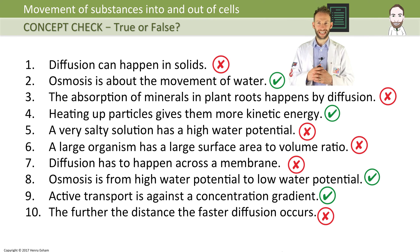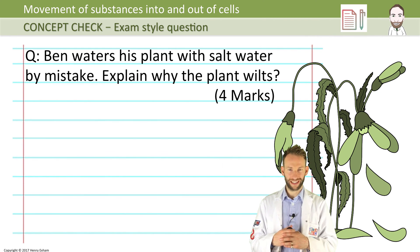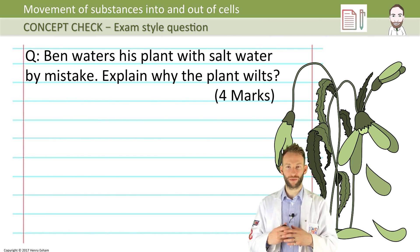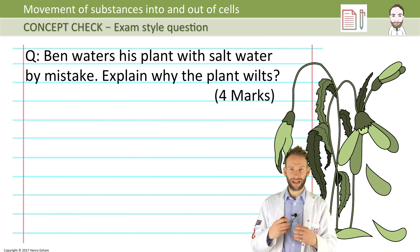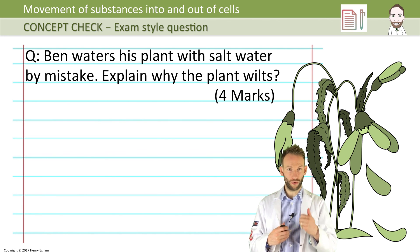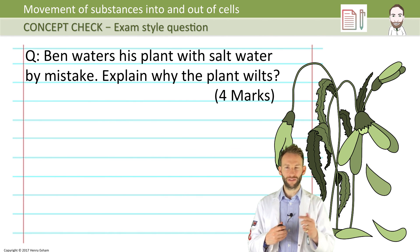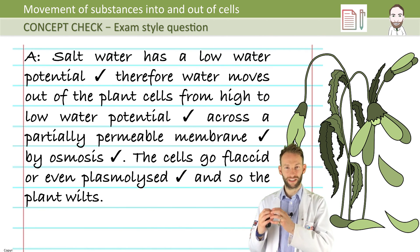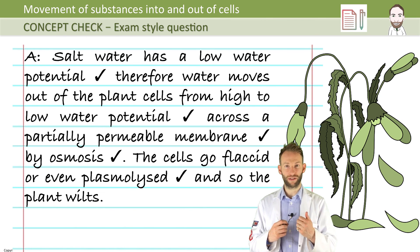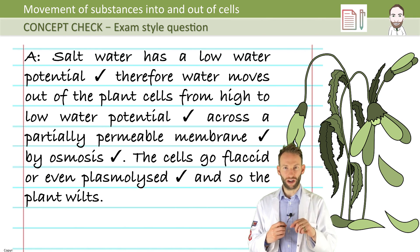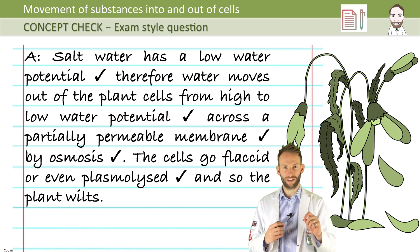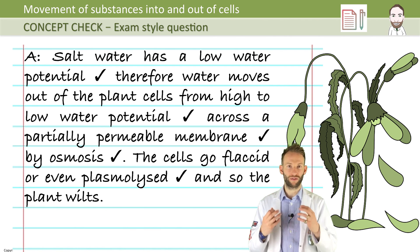The kind of question you might get in an exam — osmosis is a very popular topic. Here we have a plant that is clearly wilted. The question says: Ben waters his plants with salt water by mistake. Explain why the plant wilts. Four marks. The mark scheme: salt water has a low water potential, therefore water moves out of the plant cells from the high water potential inside the cells to the lower water potential outside the cell, across a partially permeable membrane by osmosis. Therefore the cells go flaccid or plasmolysed — good use of keywords — and so the plant wilts.